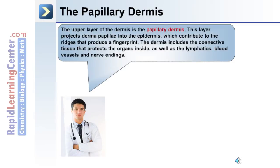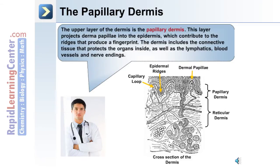The papillary dermis is the upper layer of the dermis, and this layer projects dermal papillae up into the epidermis. These contribute to the ridges that produce the fingerprint. The dermis includes connective tissue that protects the organs inside, as well as the lymphatics, the blood vessels, and nerve endings that serve both the dermal layer and the epidermal layer.